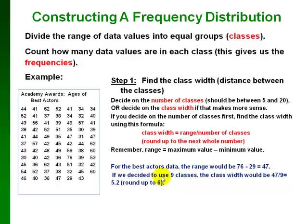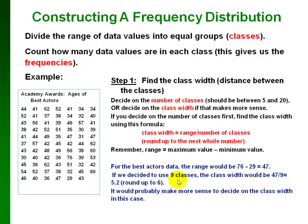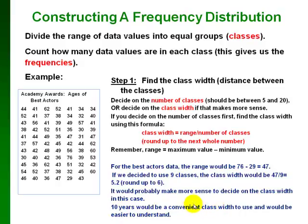Whether you use this formula or decide on the class width first depends on the situation. For ages, it might actually make more sense to decide on the class width first, because we're used to thinking about ages in terms of decades. So 10 years would be a convenient class width — it's easier to understand than using 6 years.